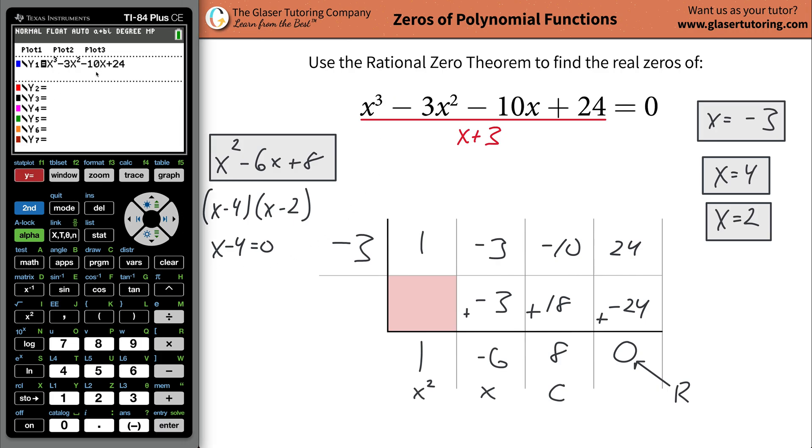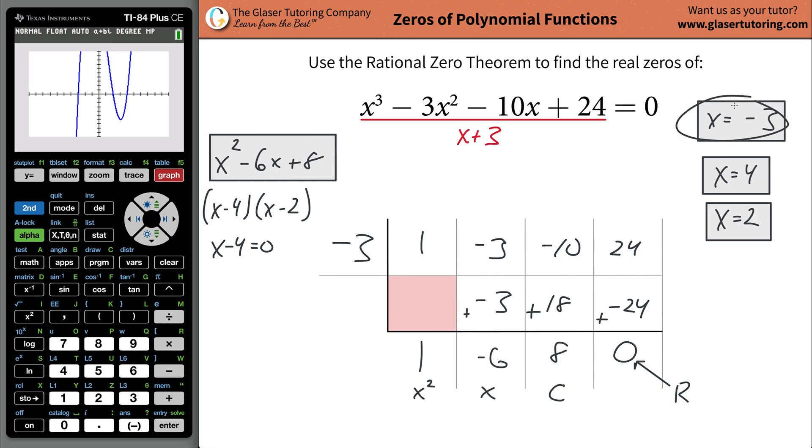You can also check this by using the calculator. Let's graph the function. I already graphed it, I did that ahead of time so I didn't have to go through 17 guesses to try to figure it out, which is unreasonable. So graph the thing, and here's the graph of the function. Notice where it crosses the x axis. It crosses it at negative 3, then it also crossed it at positive 2 and positive 4. Positive 2, positive 4.